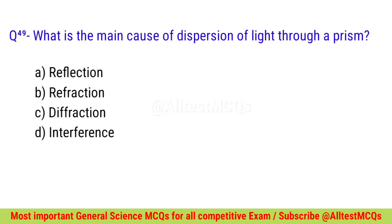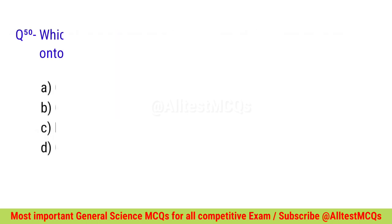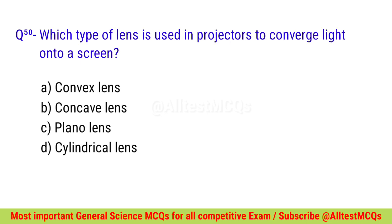Question number forty-nine: What is the main cause of dispersion of light through a prism? Right option is B — Refraction. Question number fifty: Which type of lens is used in projectors to project light onto a screen? Correct option is A — Convex lens.